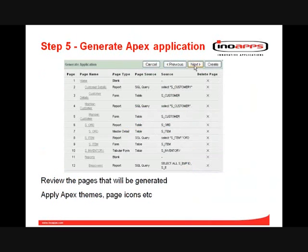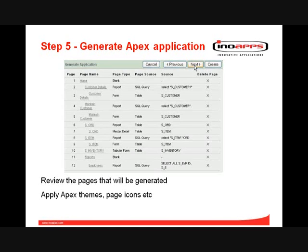Once you have done all of that — and how onerous that is will depend on how large the Forms application is that you are migrating — it is a very simple thing to just press the button and generate an APEX application. That is the easy part. You'll get a summary page to confirm everything that's going to happen, and at that point you'll be able to apply themes, page icons, and things like that, just as you would normally do in APEX. And then, as if by magic, you have an application that will run.